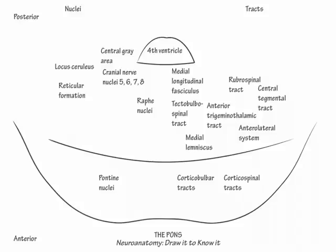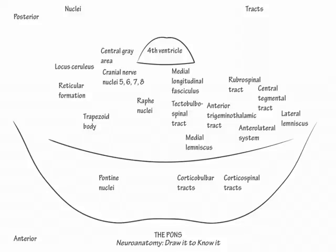Then draw the pontine components of the auditory system: the lateral lemniscus in the lateral tegmentum, the trapezoid body, and the superior olivary nucleus in the anterolateral tegmentum.